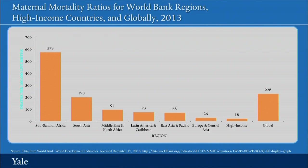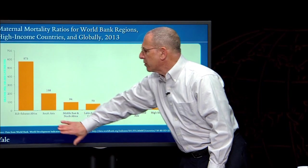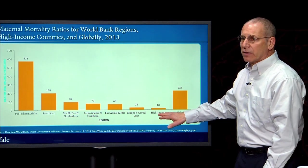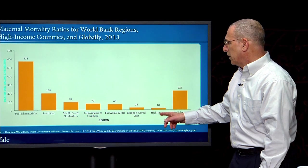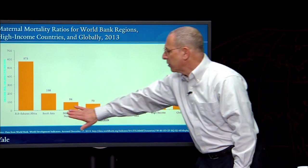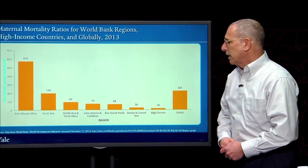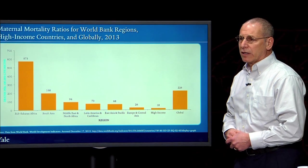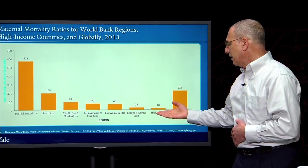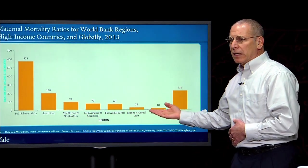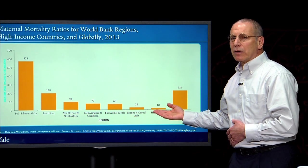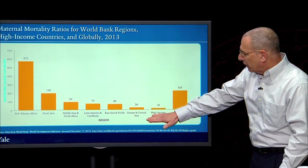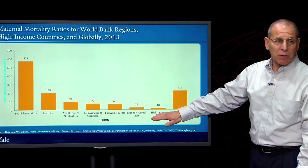As Emily pointed out, the maternal mortality ratio in sub-Saharan Africa is about 30 times the rate in high-income countries. In principle, women rarely die of complications of pregnancy in high-income countries. Anything above those rates is preventable — that's an important point we'll return to throughout this course.